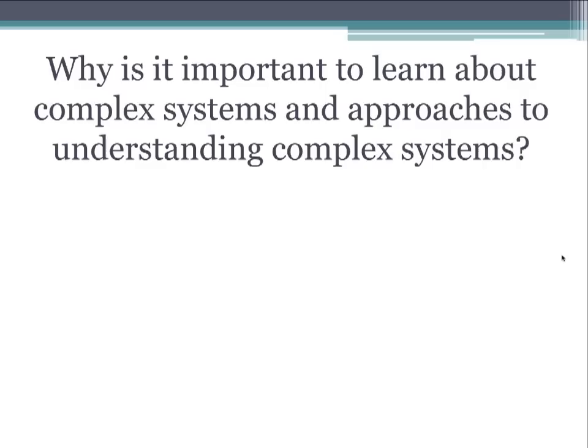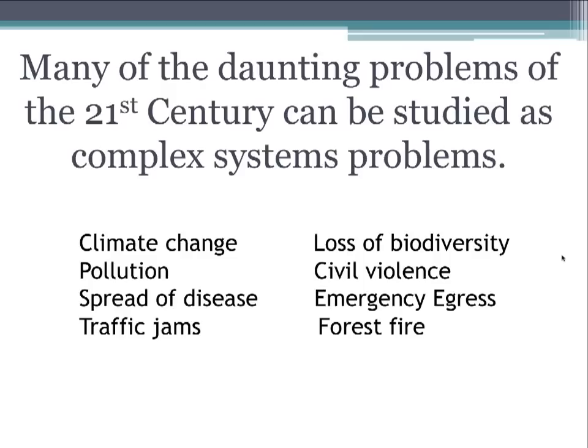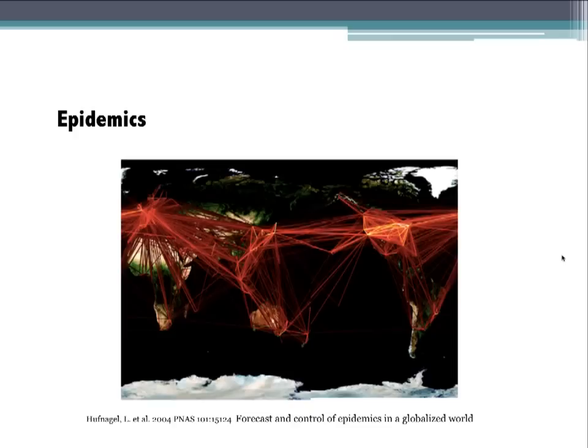Why is it important to learn about complex systems? It's because many of the daunting problems of the 21st century can be studied as complex systems problems: climate change, pollution, spread of disease, traffic jams, loss of biodiversity and ecosystems, civil violence, emergency evacuation, and forest fire spread — these and many other problems can be studied as complex systems problems.